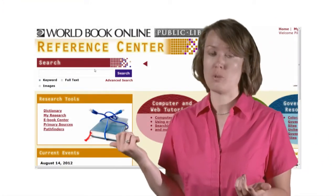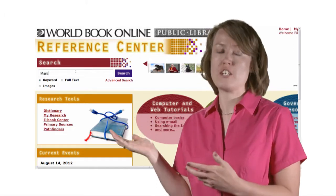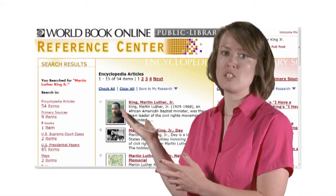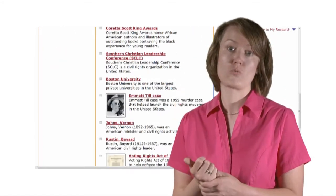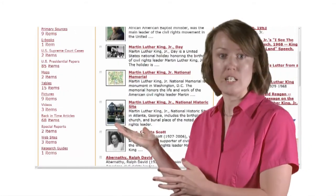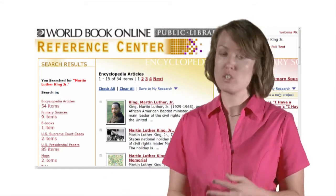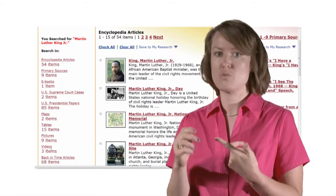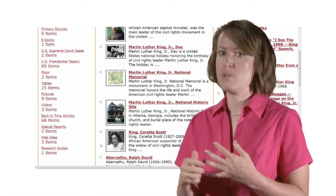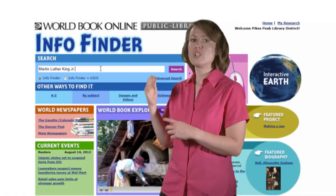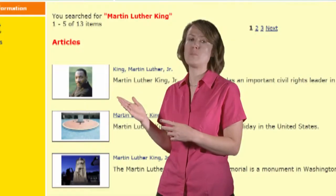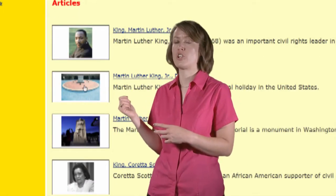So, how do you do research with World Book? Say we want to look for information on Martin Luther King, Jr. You simply type keywords into the search box, and these are the results that pop up. As you can see, by using World Book Reference Center, we get not only encyclopedia articles, but primary sources, relevant e-books, and a variety of other resources such as videos, photos, Supreme Court cases, presidential papers, maps, websites, and more. You can run similar searches in World Book Info Finder, World Book Discover, or World Book Online Kids, but with simplified results for younger researchers.